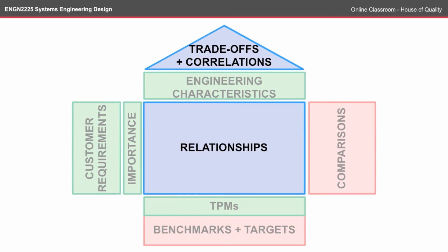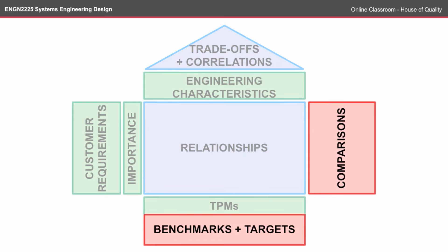The areas in blue are the trade-offs, correlations, and relationships — the interrelationships between the what's and the how's: the customer requirements and the engineering characteristics. These are the two things we're going to look at in this House of Quality online classroom. We won't cover certain other aspects because the design hasn't evolved far enough, so it's a bit too early for a comparison.